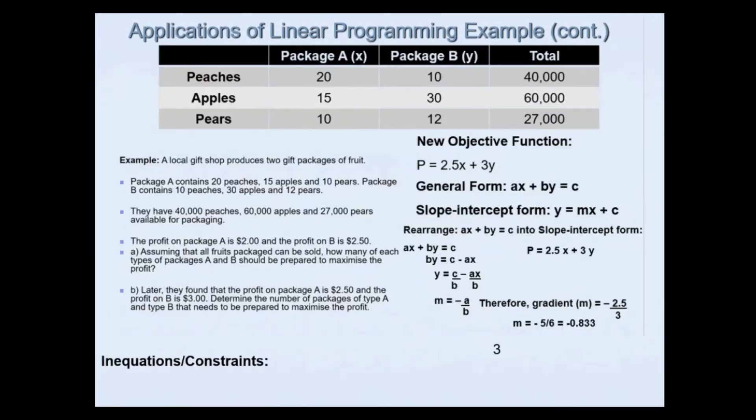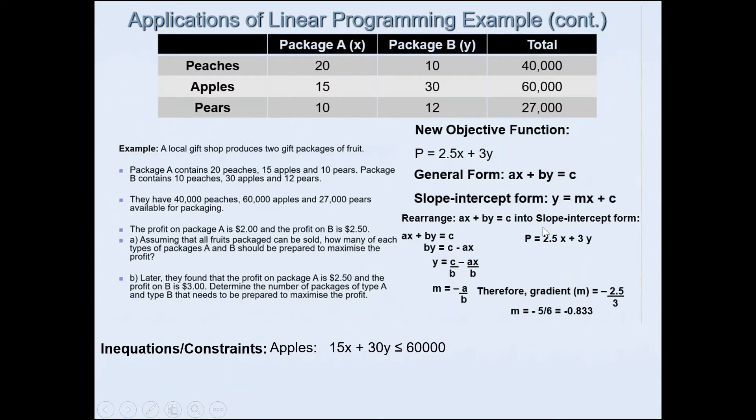Using the equations now, we'll find the gradient for each constraint. For peaches, 20x plus 10y is less than or equal to 40,000. This gives you a gradient of negative 4 thirds. For apples, 15x plus 30y is less than or equal to 60,000, giving a gradient of negative 2. For pears, negative 10 over 12 simplifies to negative 5 sixths, which is negative 0.833 recurring.